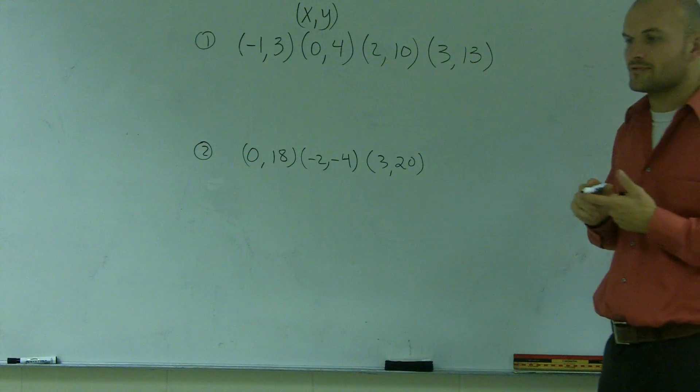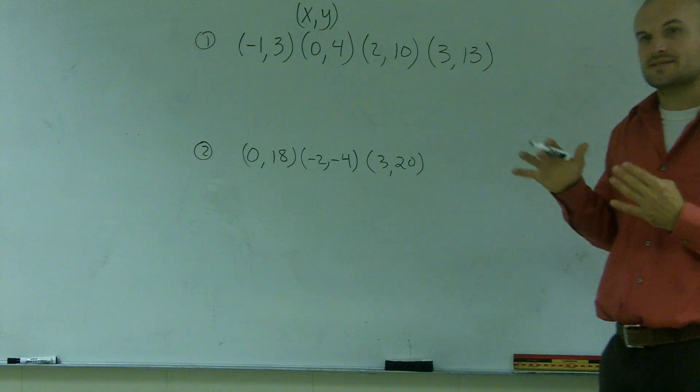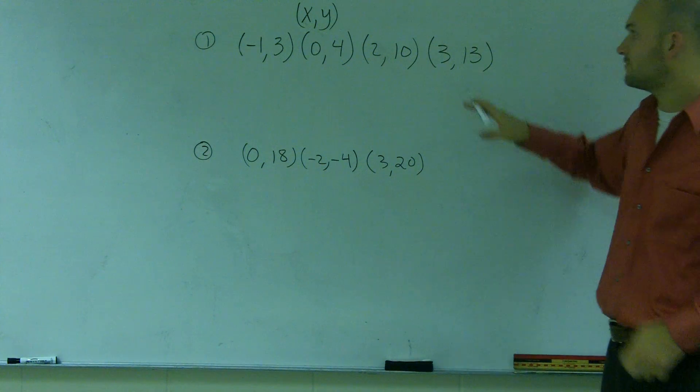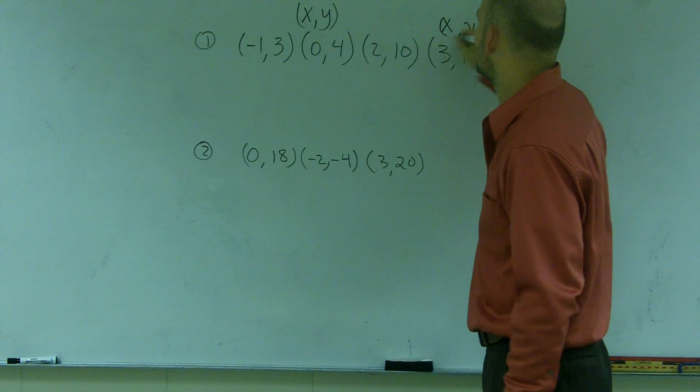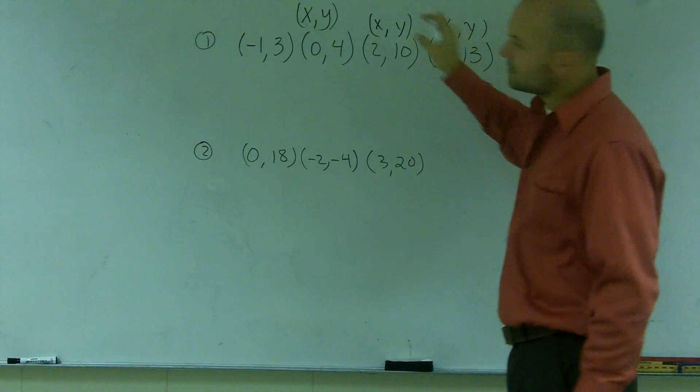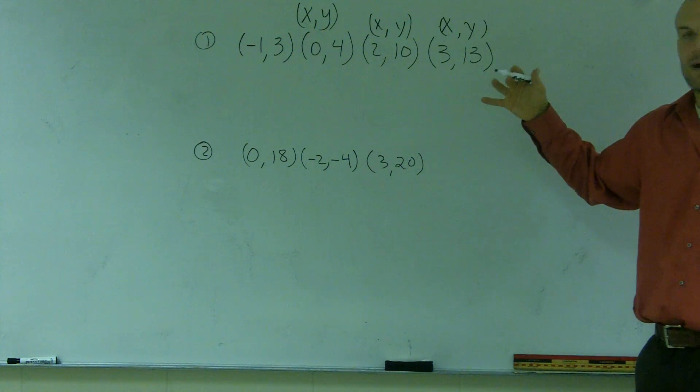So, what we need to do is, if you remember domain and range, domain is going to be the set of all your x values. So, if I look over here, I can rewrite these as x comma y. x comma y. Right?